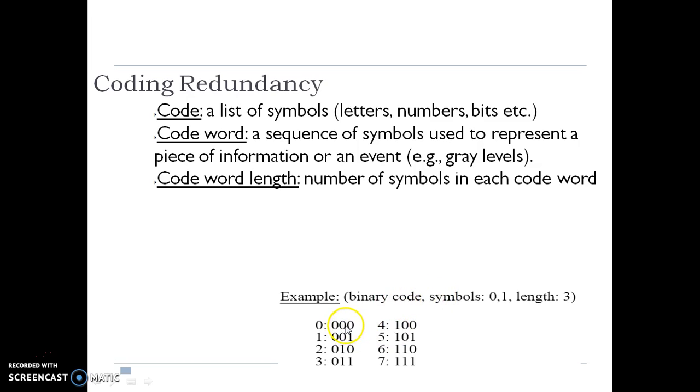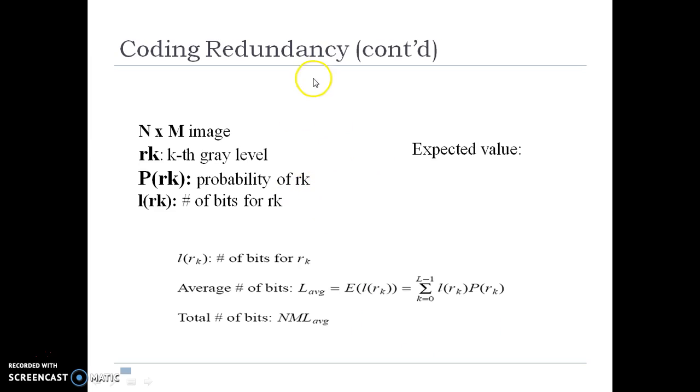For example, using a binary code with symbols 0 and 1, digits 0 to 7 are represented with binary codes of length 3. For images, N by M is the image size.